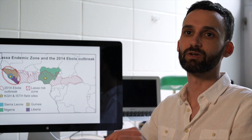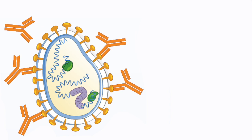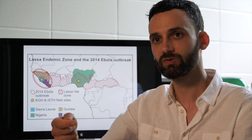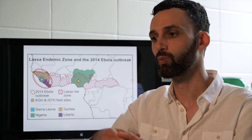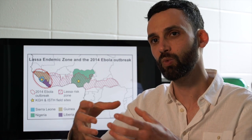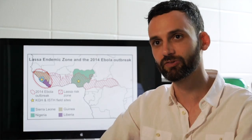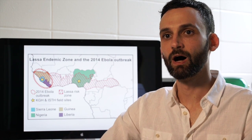Most of these mutations that happen within a person — because they help the virus evade the immune system — are evolutionary dead ends. Those mutations are not well suited to be transmitted to another person, so they occur but you rarely see them again in another individual.